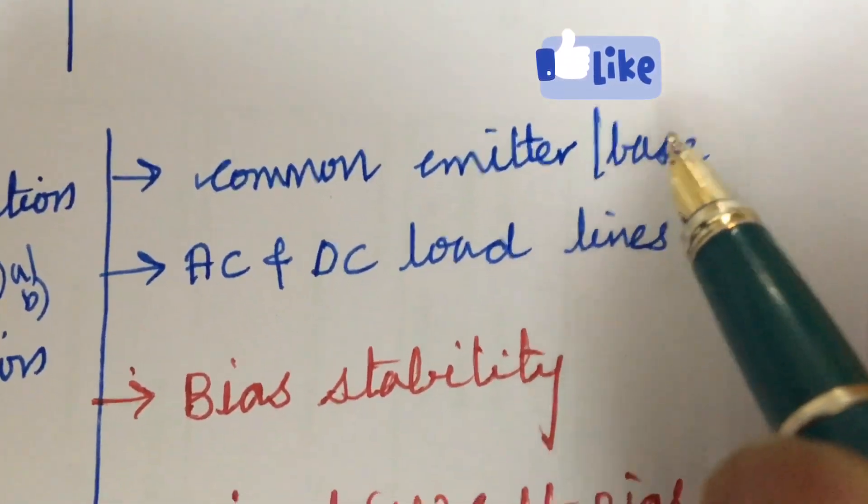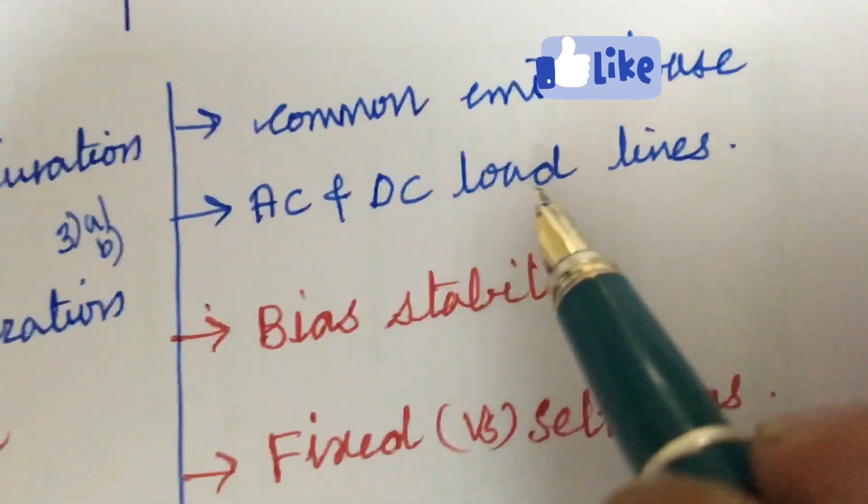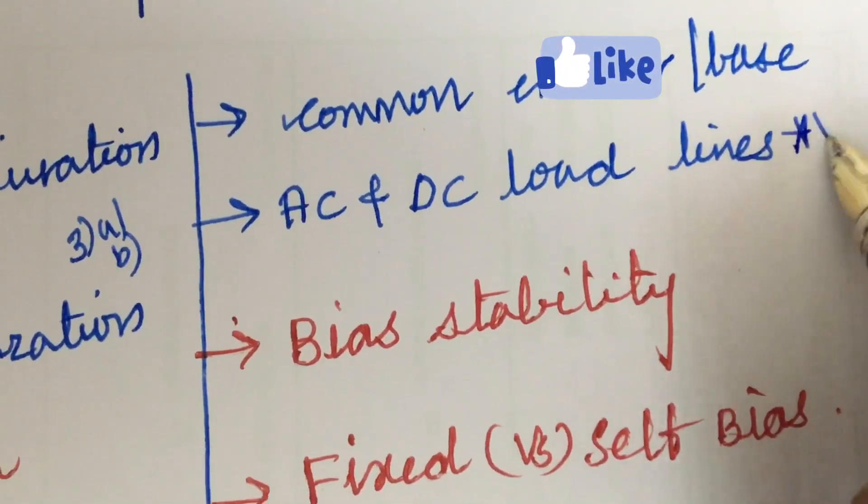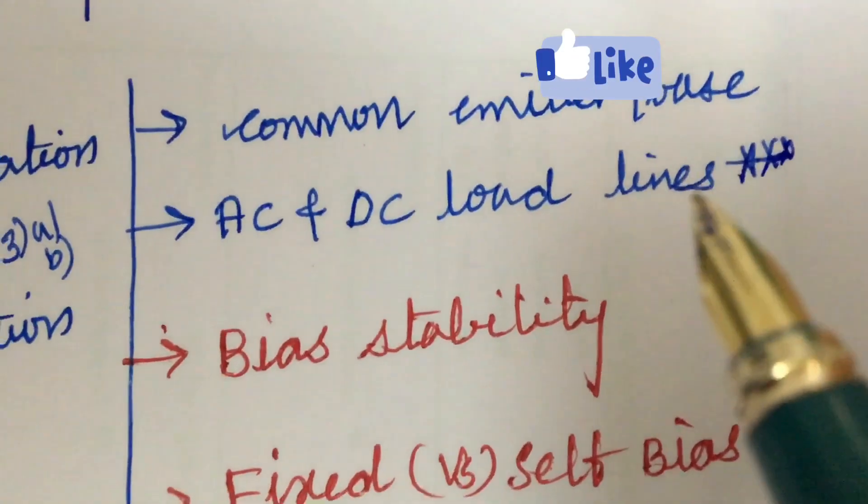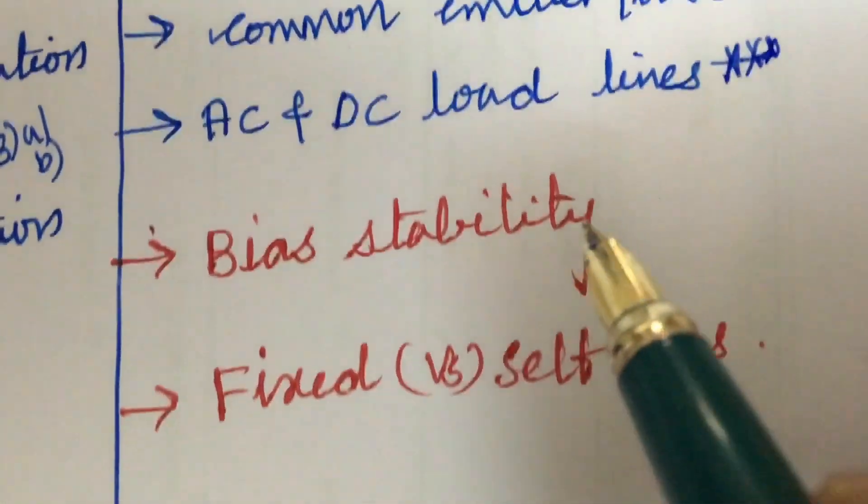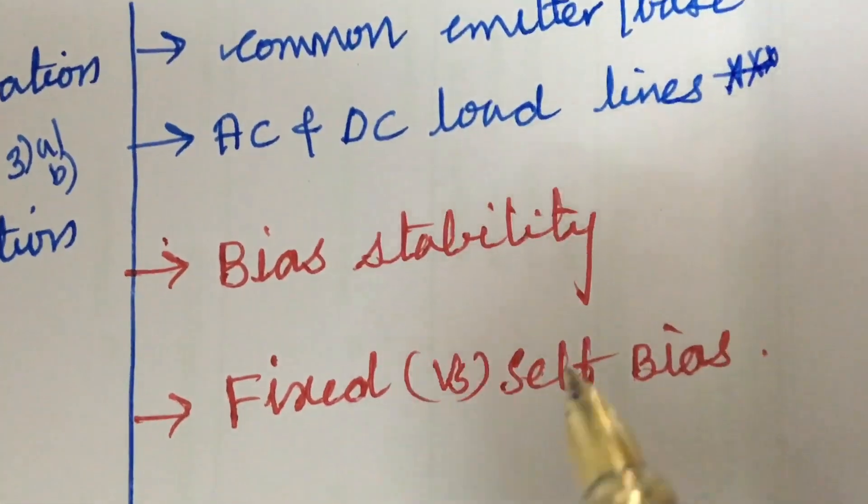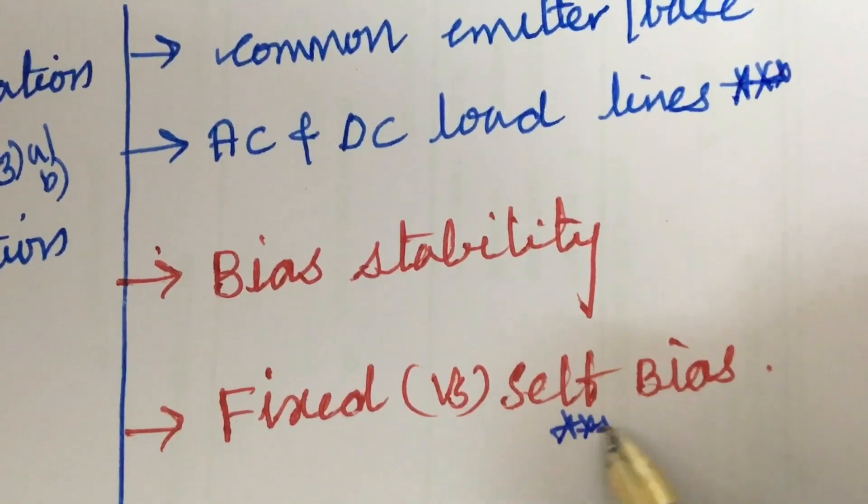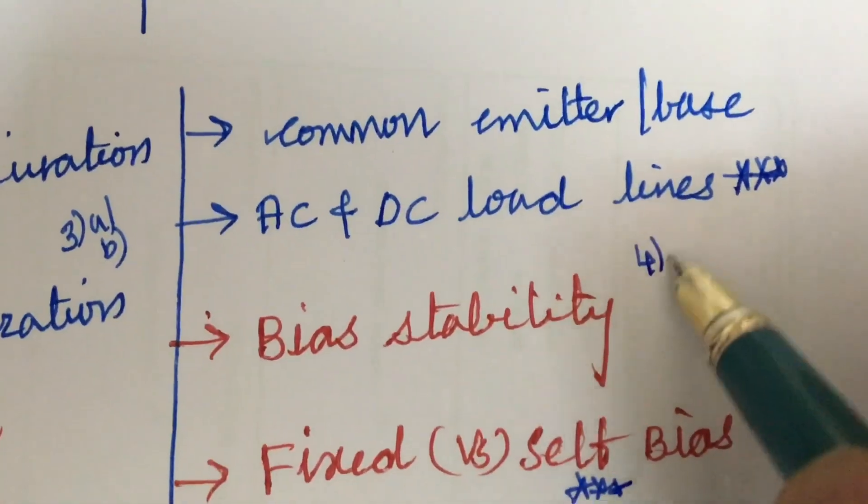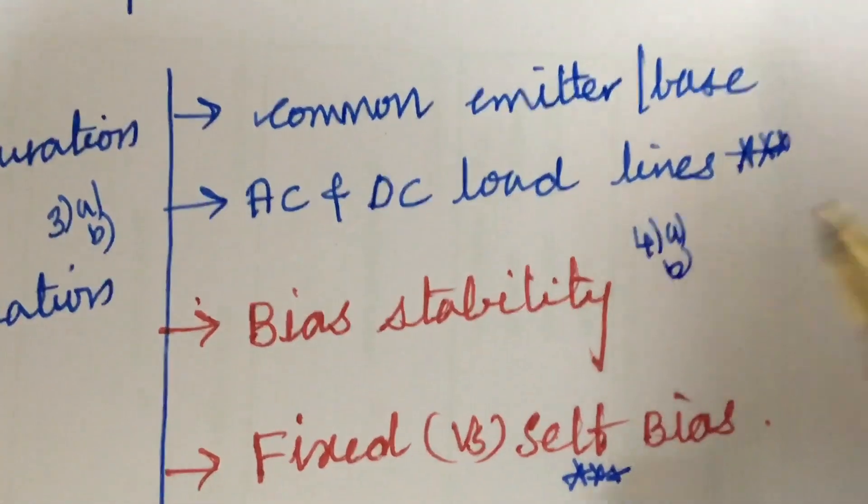Later, the common emitter as well as common base, and AC as well as DC load lines is said to be very important, and the problems related to it. And bias stability and the fixed versus self-biasing is said to be very important and gunshot question. From this part we can expect 4A as well as 4B, dear students.